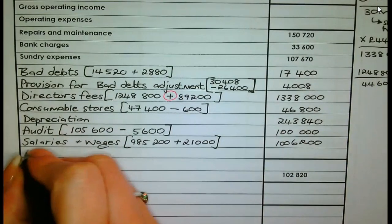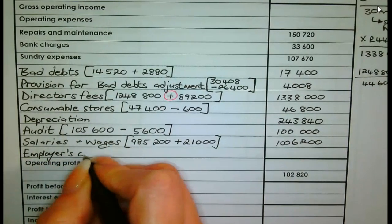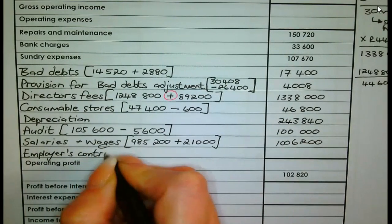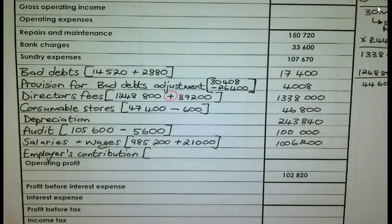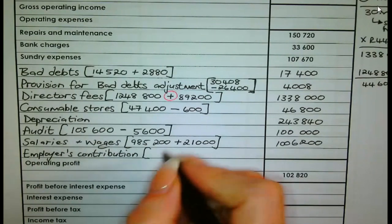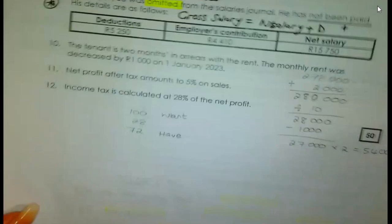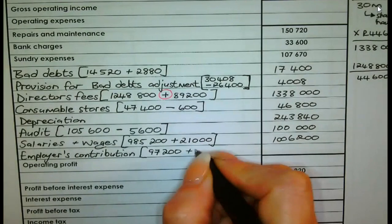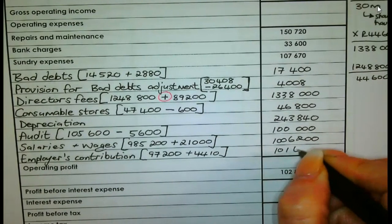Last but not least is the employer's contribution — please do not forget it is an expense for the company. Currently, employer's contribution is R97,200. Add R4,410 — the employer's contribution for the omitted employee — giving us a final amount of R101,610.